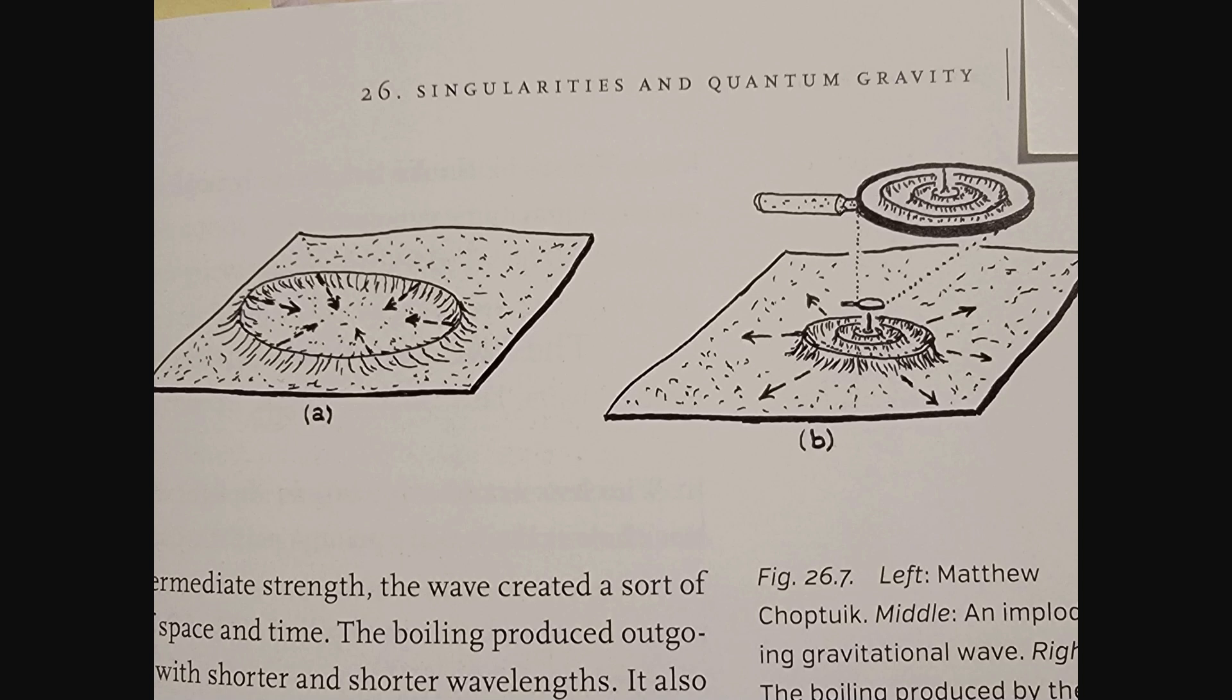When Choptuik precisely tuned the waves to an intermediate strength and formulated them to implode symmetrically, he was met with a seeming boiling of spacetime, leaving behind only an infinitesimally small naked singularity. That's right, a naked singularity created by simulating gravitational waves on the basis of Einstein's laws of relativity, causing Hawking to officially concede the bet.